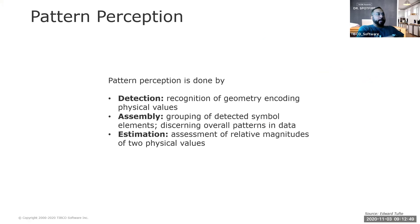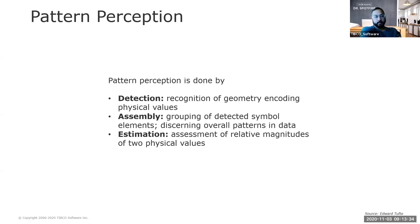Going back up to pattern perception — how humans recognize patterns and visual information — Edward Tufte breaks this into three groups: detection, assembly, and estimation. Detection is recognizing the shapes and geometries used, such as bar charts or scatter plots with size markers. Assembly is grouping those elements — how the pattern of different shapes within a chart are arranged relative to each other. Estimation is looking at the magnitude: the sizes of bars, the sizes of dots in a scatter plot. These three areas of pattern perception are useful to keep in mind when building visualization mods or custom visualizations.